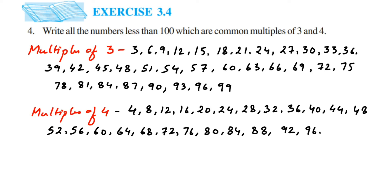Now from here we're going to write down the common multiples—those which are present in both lists. So, common multiples of 3 and 4 which are less than 100.